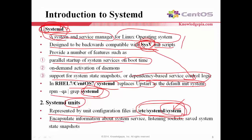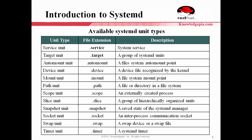Unit files encapsulate information about the system service, listening sockets, and save the system state snapshots. Available Systemd unit types — each service must have their unit file to be managed by Systemd. Systemd supports the following unit types: service, target, automount, device, mount, path, scope, slice, snapshot, socket, swap, and timers. Each unit type has its own extension — for example, .service, .target, .automount, and so on.